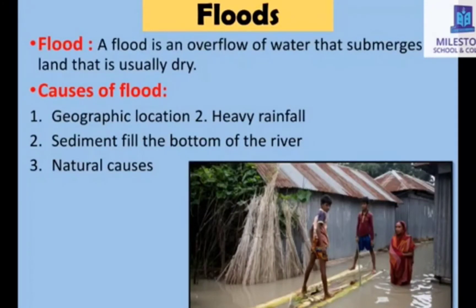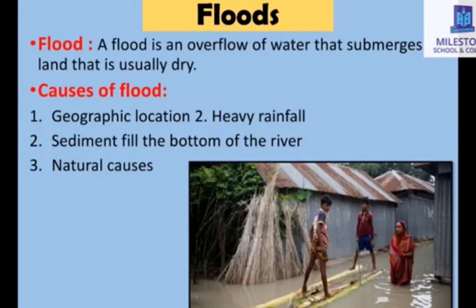We also learned about flood in our previous class. A flood is an overflow of water that submerges land that is usually dry. There are some causes of flood: due to geographical location, heavy rainfall, sediment filling the bottom of the river, and some natural causes. Bangladesh has experienced seven bad floods since 1987, most likely to happen between the months of Ashar to Ashin.